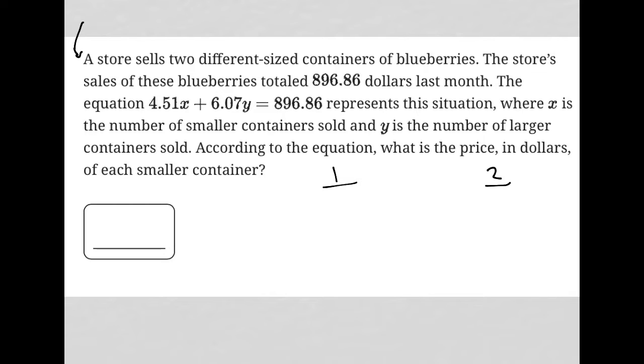The next sentence says the store's sales of these blueberries totaled $896.86 last month. Okay, so sales of one plus two, basically, is how they got to $896.86.